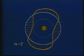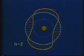In the second orbit, n equals two, two De Broglie wavelengths fit about the nucleus at a distance which once again produces a standing matter wave.